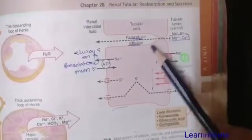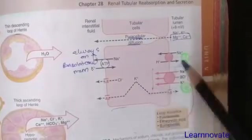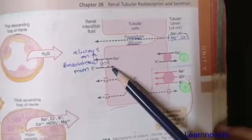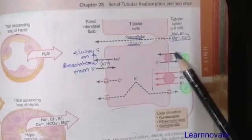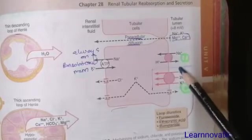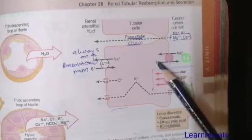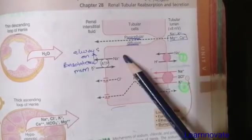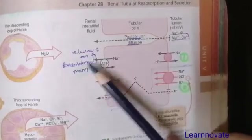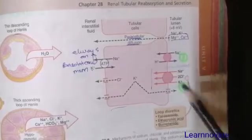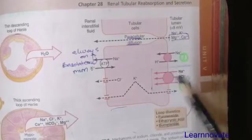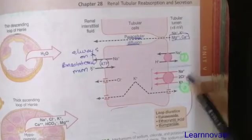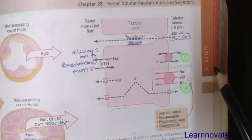This solute reabsorption occurs via specialized channels and pumps. At the basolateral side is the sodium-potassium ATPase pump. At the apical end there are two pumps: the sodium-hydrogen ATPase counter-transport pump, which causes secretion of hydrogen and reabsorption of sodium; and the 1 sodium–2 chloride–1 potassium cotransporter pump, through which sodium, chloride, and potassium are reabsorbed.